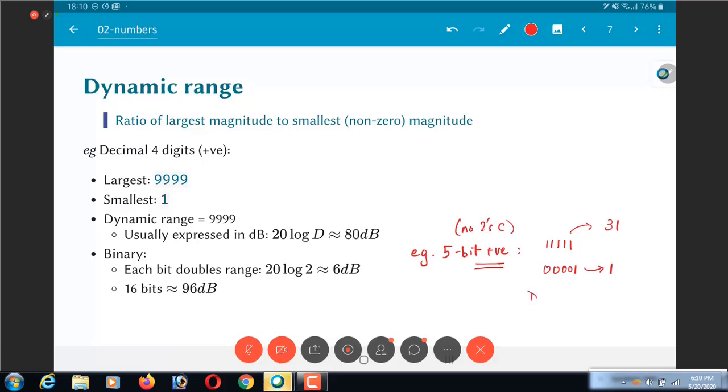The dynamic range will be equal to 31 divided by 1 equal to 31, and in decibels that would essentially be 20 log to base 10 of 31. You can compute whatever that is.